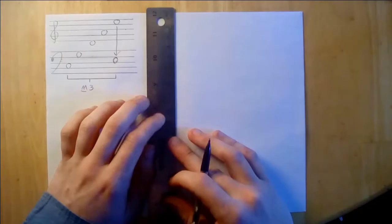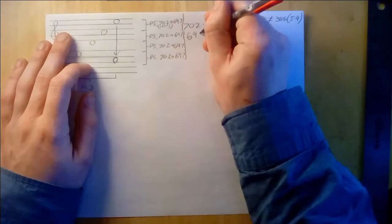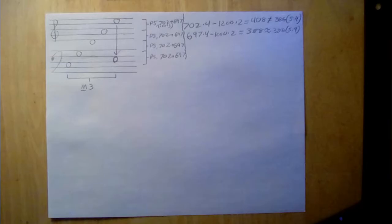For example, to better approximate the frequency ratio of 5 to 4, we can slightly flatten fifths away from pure so that after stacking 4 fifths, we land on a significantly flatter major third.